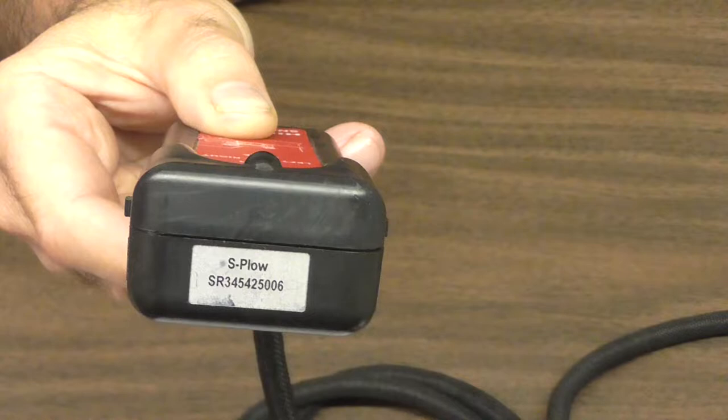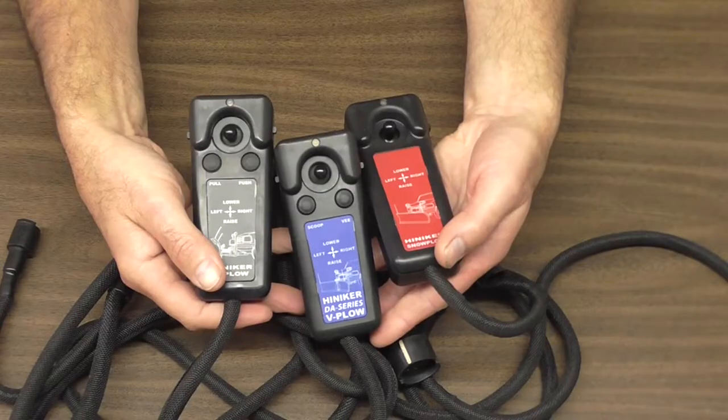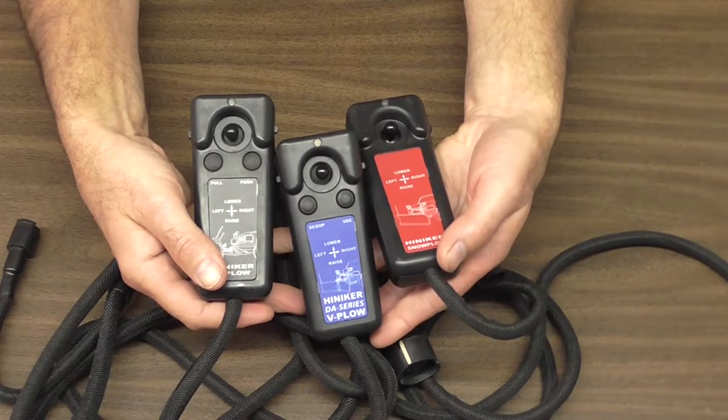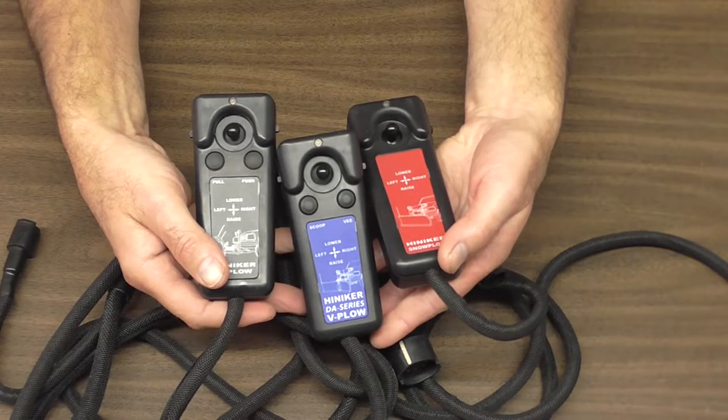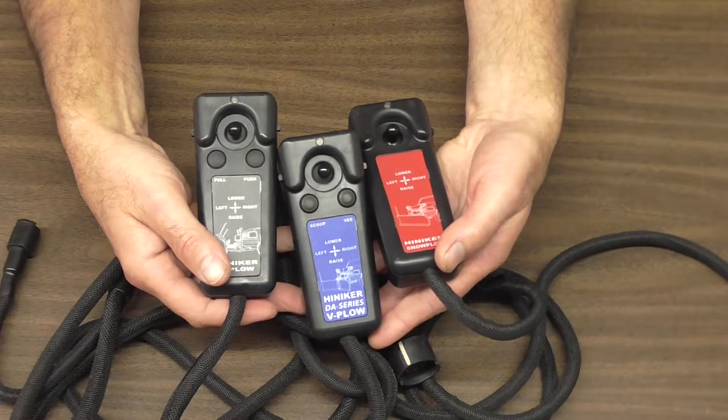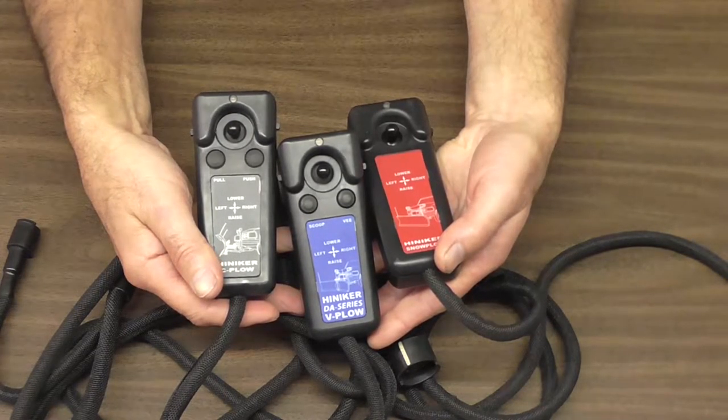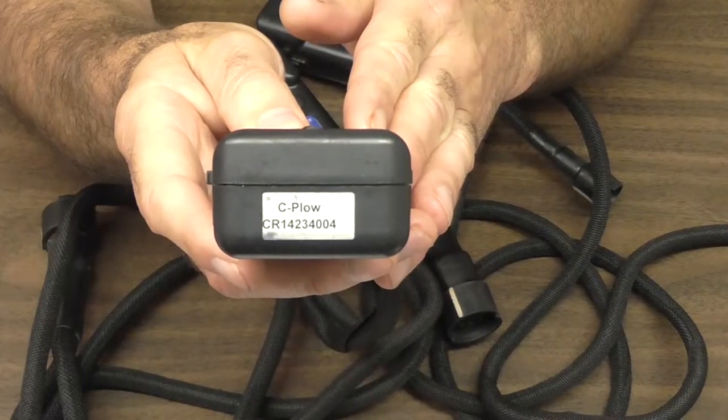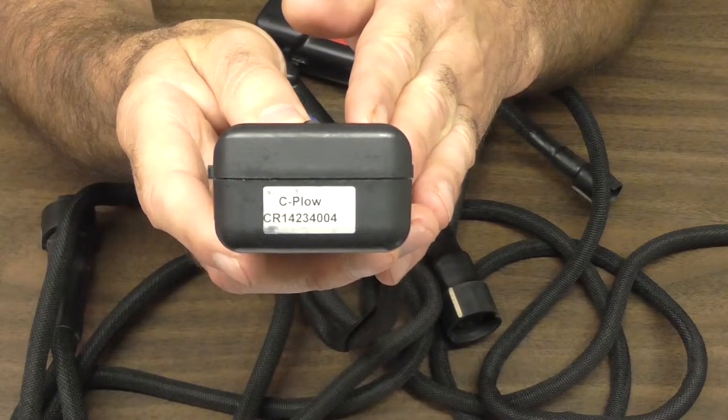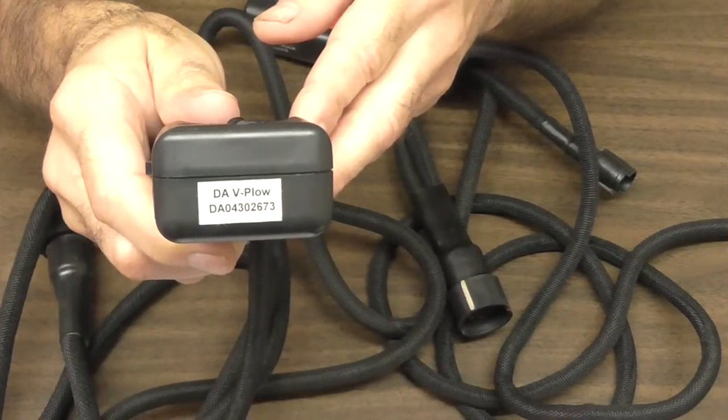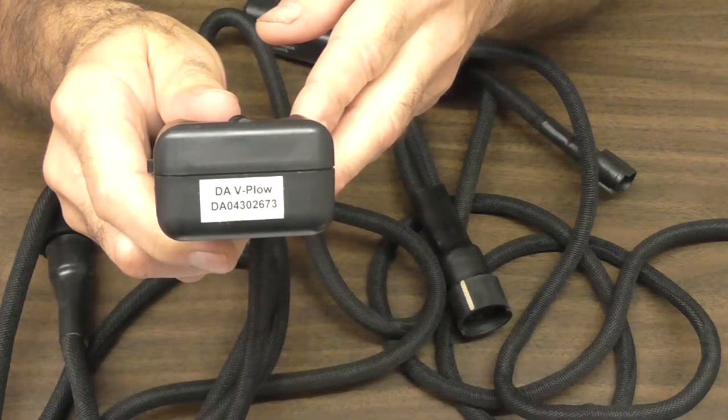All double-acting B plows have replaceable switches. The controllers have different face plates for each model plow. The red one is our straight blade, the blue one in the center is the double-acting B plow, and the gray one is for our C plow. This would be a C plow controller with a CR in the serial number, and this would be our DAV plow.